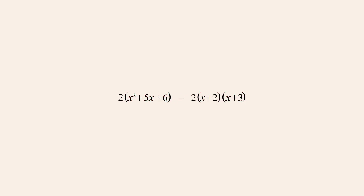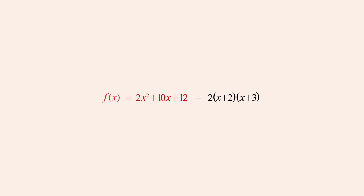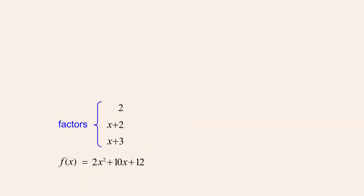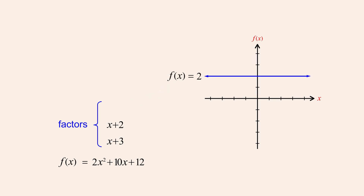So the original quadratic expression 2x-squared plus 10x plus 12 can be written as the product of three factors: two, x-plus-two, and x-plus-three. The zero product property tells us that the zeros of the function defined by this quadratic expression are identical to the zeros of the functions defined by each of its factors. The first factor, two, is a constant function that has no zeros, since regardless of the value of x, the value of that constant function will never be zero.